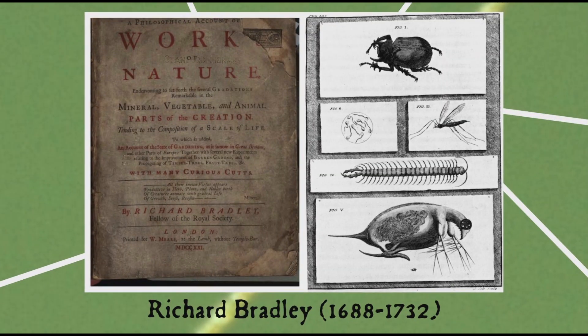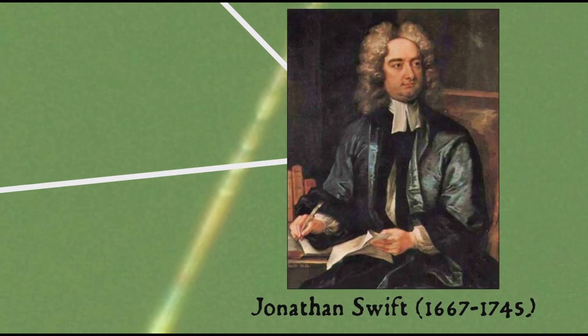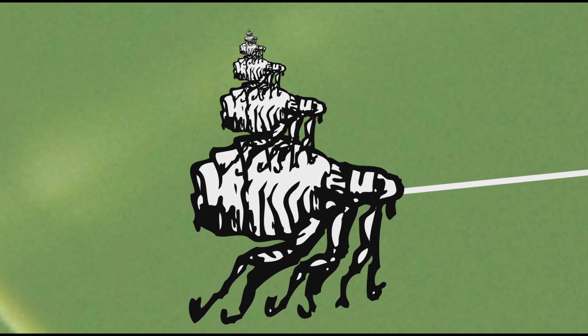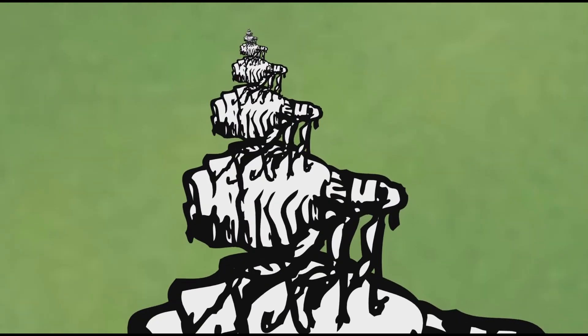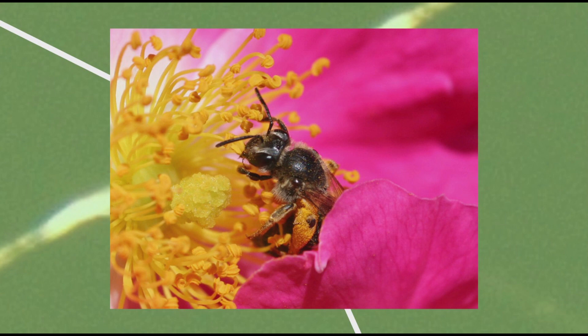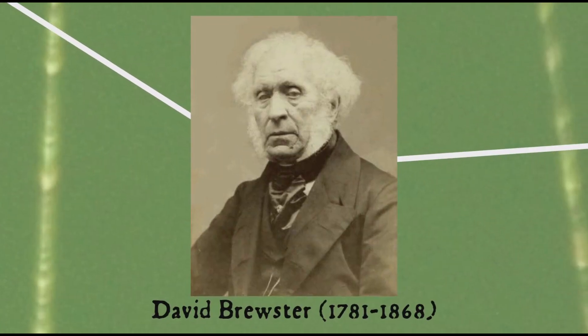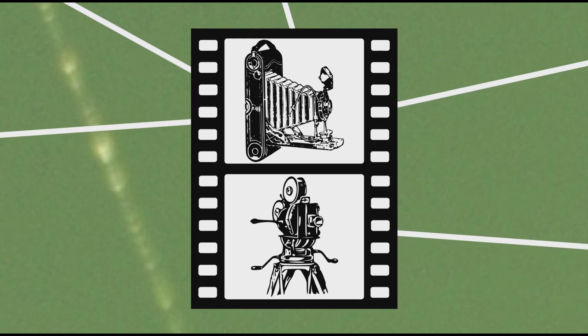In the 18th century, naturalist Richard Bradley similarly noted how parasitic insects prey upon each other in turn, an observation which was rendered into verse by satirical author Jonathan Swift as a metaphor for lesser writers: "So naturalists observe, a flea hath smaller fleas that on him prey, and these have smaller yet to bite him, and so proceed ad infinitum." Bradley was also a pioneer in other ways — an early researcher into the pollination of plants by insects, the first to publish recipes featuring pineapples in English, and he invented an early form of the kaleidoscope for use in designing gardens, later perfected by optics expert David Brewster, who was also a photography pioneer.